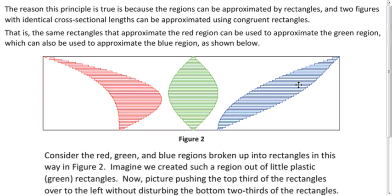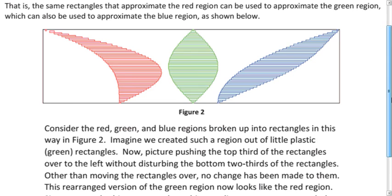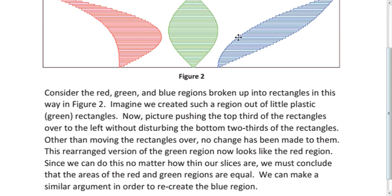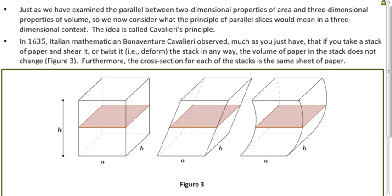The rectangles haven't fundamentally changed their areas — they're just changing their positions. So think of it as just shifting around those tiny rectangular regions and getting a new shape with the same area. Now we can extend this concept into three dimensions, and this is what we call Cavalieri's Principle.